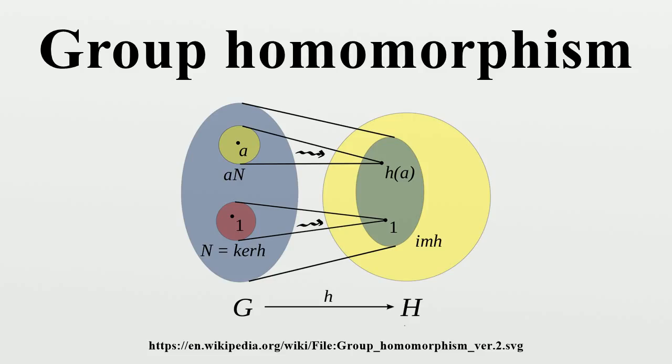And it also maps inverses to inverses in the sense that... hence one can say that h is compatible with the group structure.